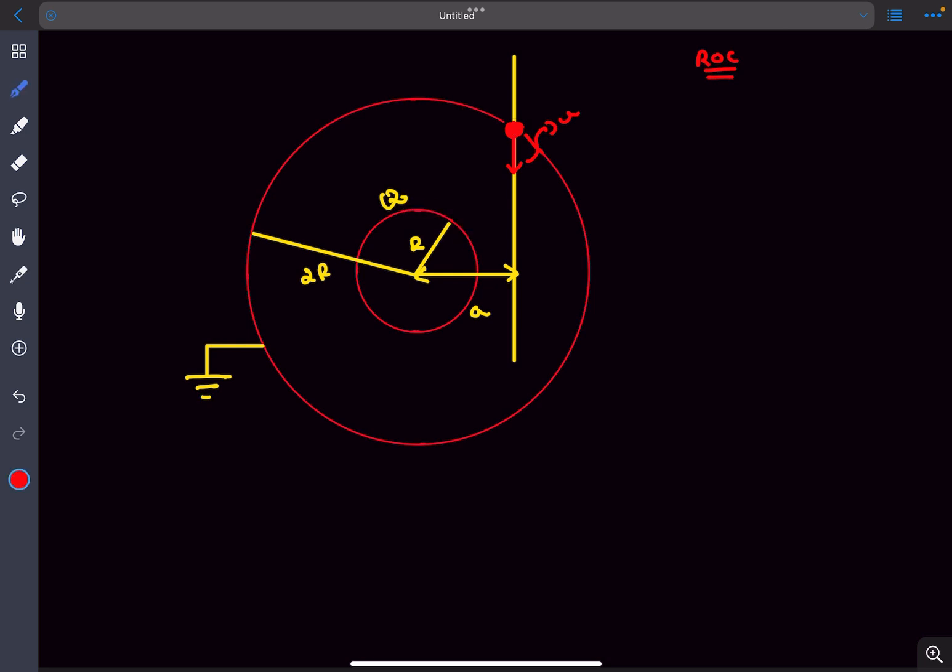So now the radius of curvature of the path of the particle at this instant will be the speed squared divided by the normal acceleration, and if you solve it you'll get this value.